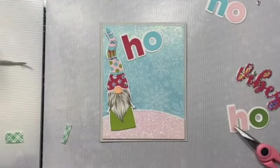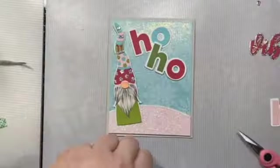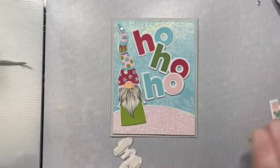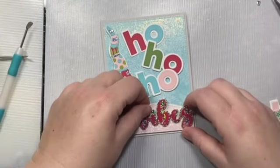And I'm using some white glitter paper for the little snow background there that the little gnome is standing on. I'm going to arrange my little ho-ho-hos all askew, and then we'll add the vibes at the bottom. And that is going to finish off our card with our little funky gnome and his little ho-ho-ho vibes sentiment.